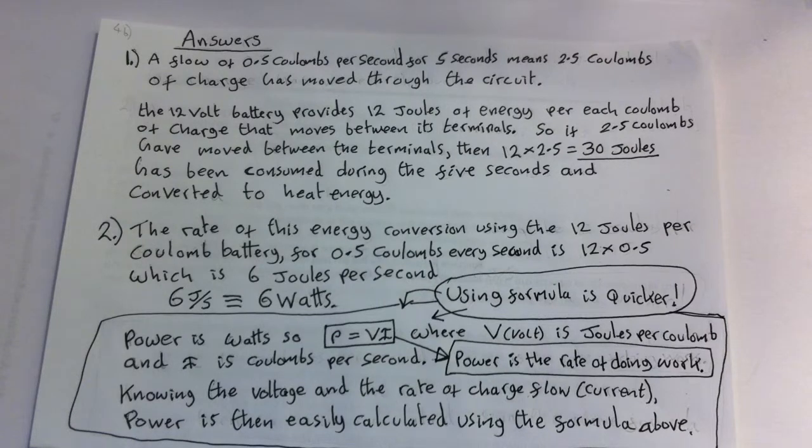This relationship can be written as P equals V times I where power is P, V is voltage, joules per coulomb, and I is the current of charge, current or charge flow, coulombs per second. Once you get a feel for power watts, energy joules, and current coulombs per second, then instead of having to go through all the above logical steps, you can just use the formula P equals V times I, which is far quicker.